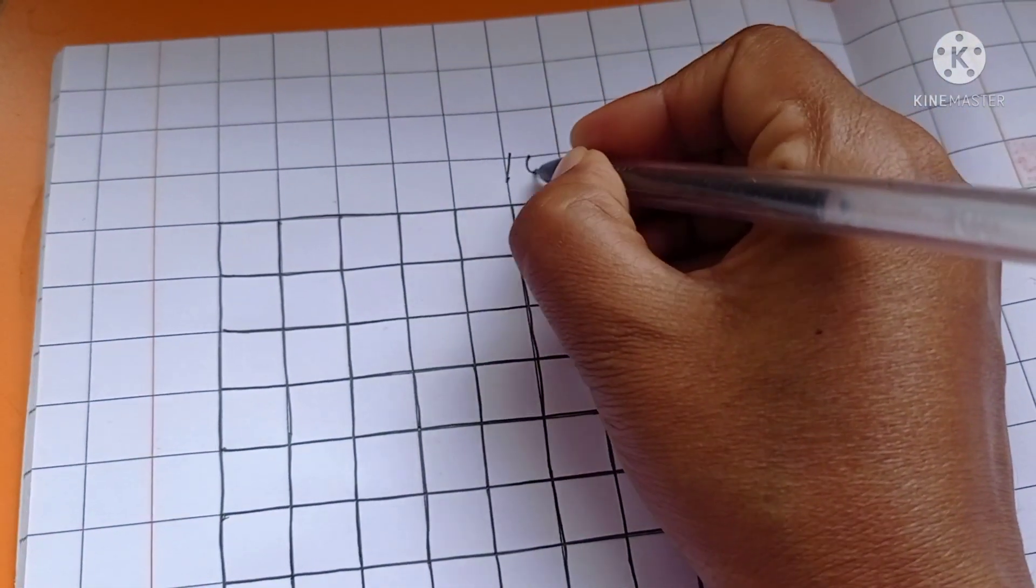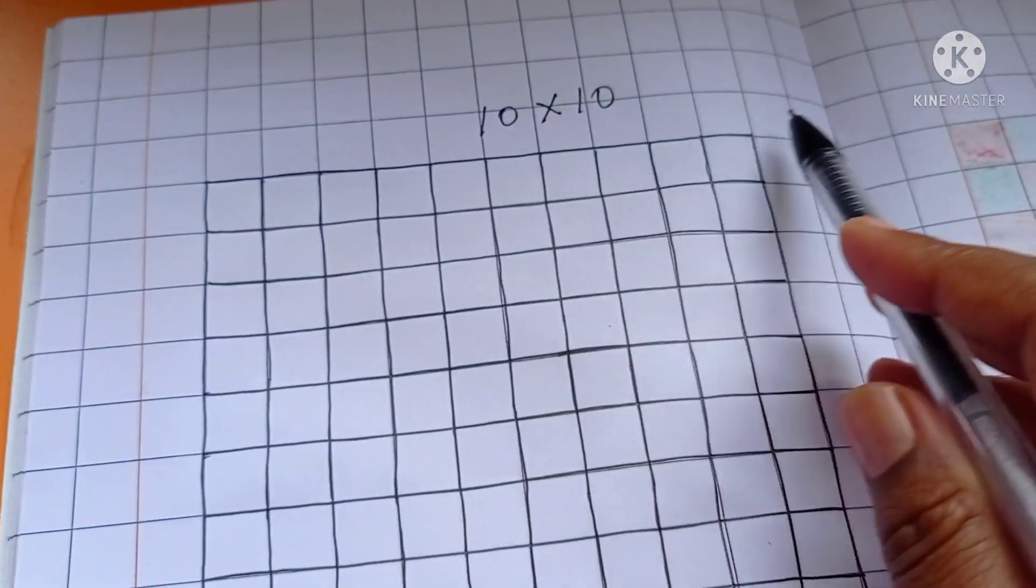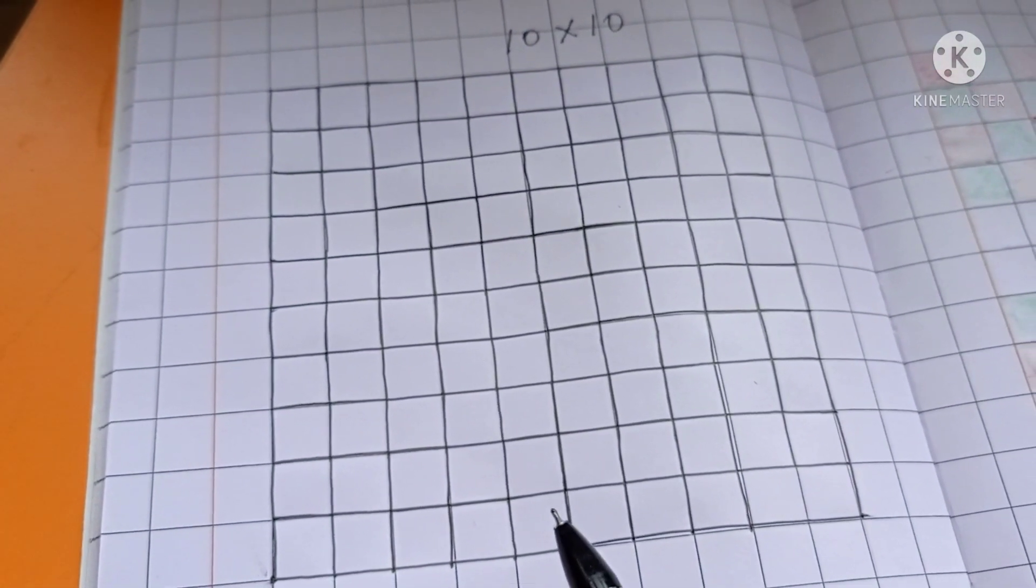Here we have grid 10 into 10, that means the grid has divided into equal 100 parts, so there are 100 squares. By using this grid, how to represent decimal number, let's see.